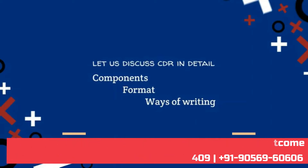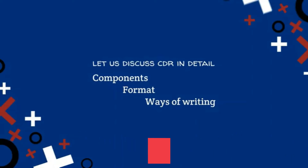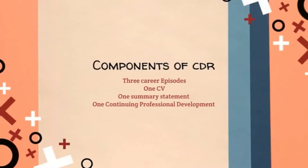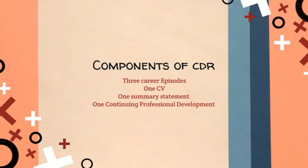We will cover CDR's competencies, its writing format, and different ways of writing it. In total there are four documents you need to write: one CV, one summary statement, one continuing professional development document, and three career episodes. The career episodes are the most important reports, and many people are afraid of writing them. From these career episodes, the assessment will be made to determine whether you are eligible for Australian immigration.